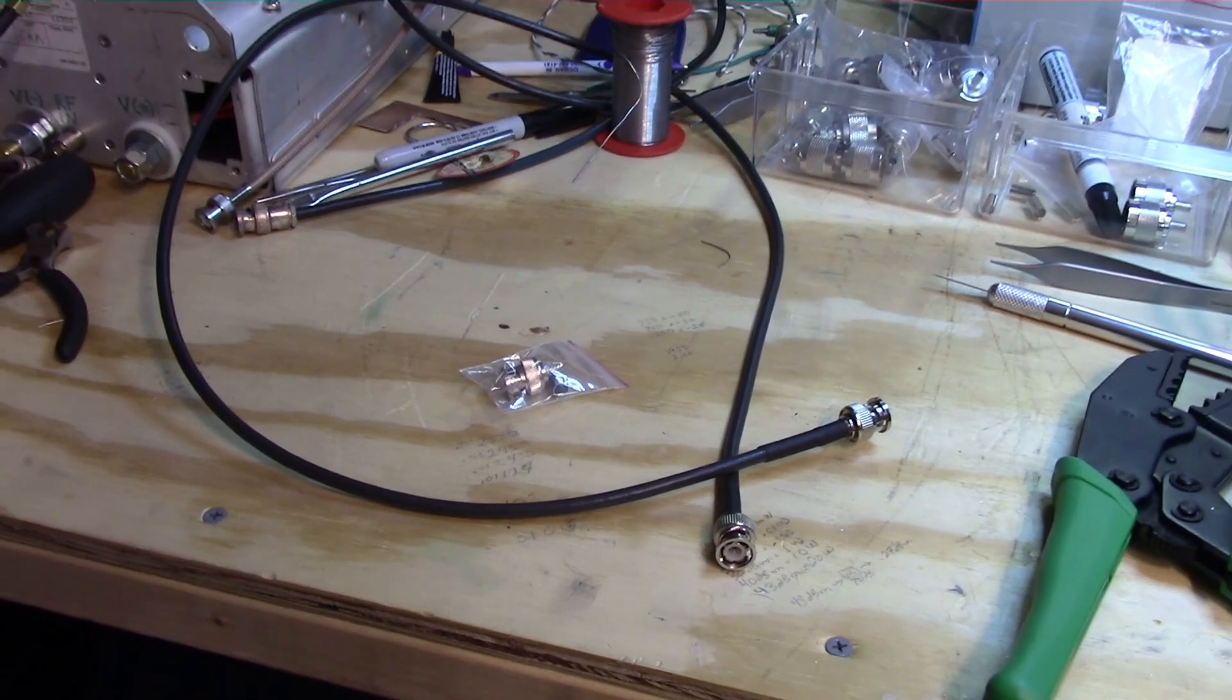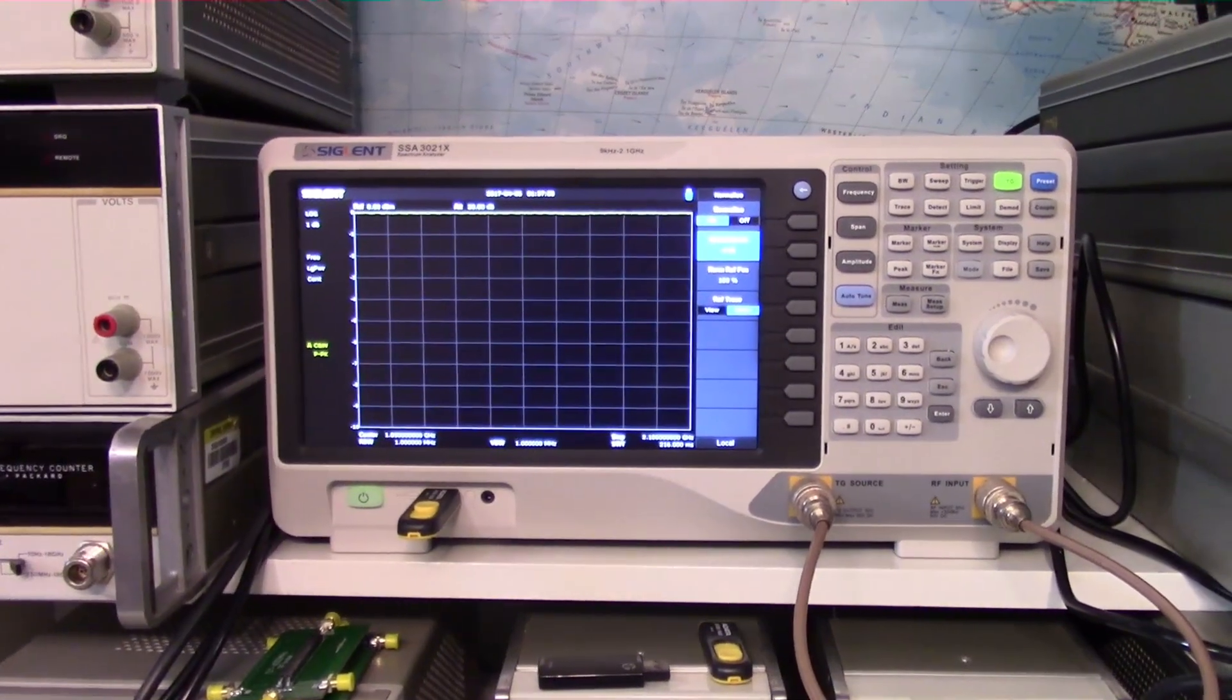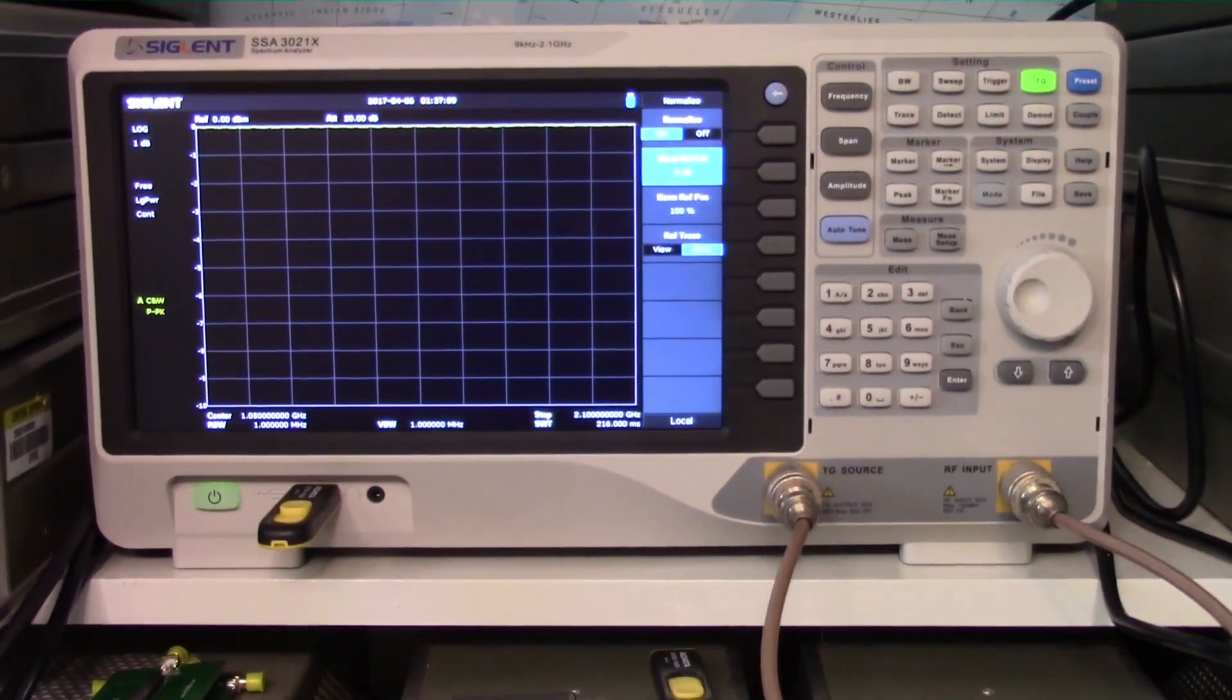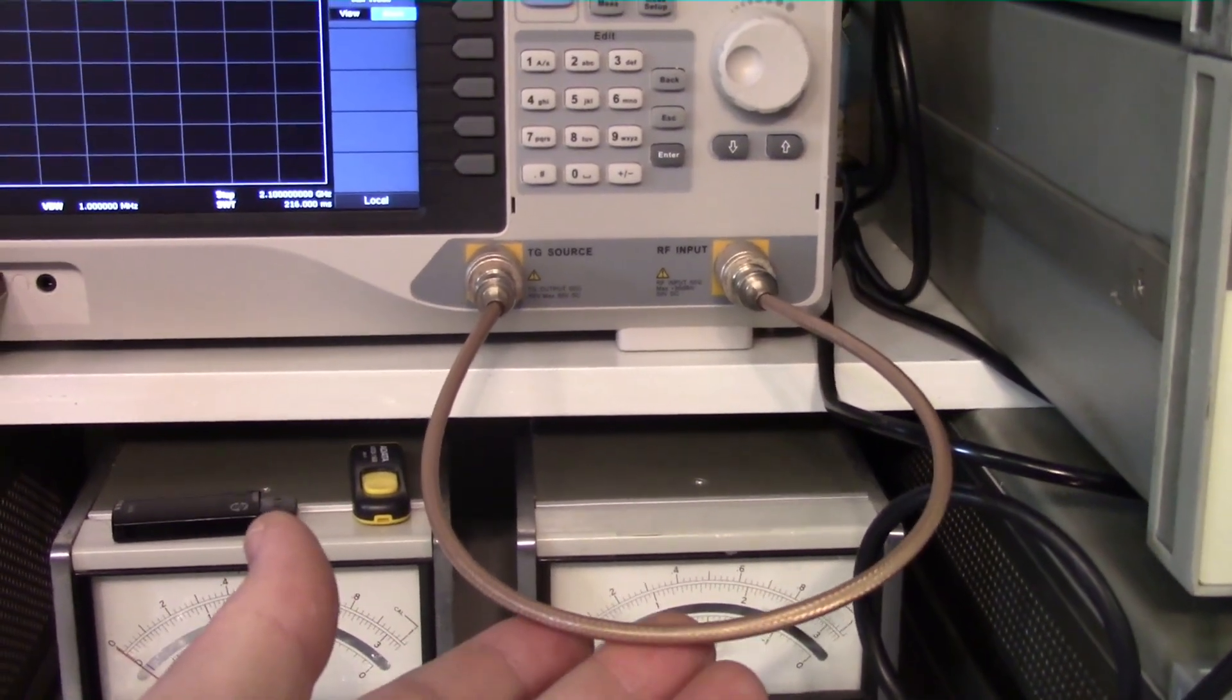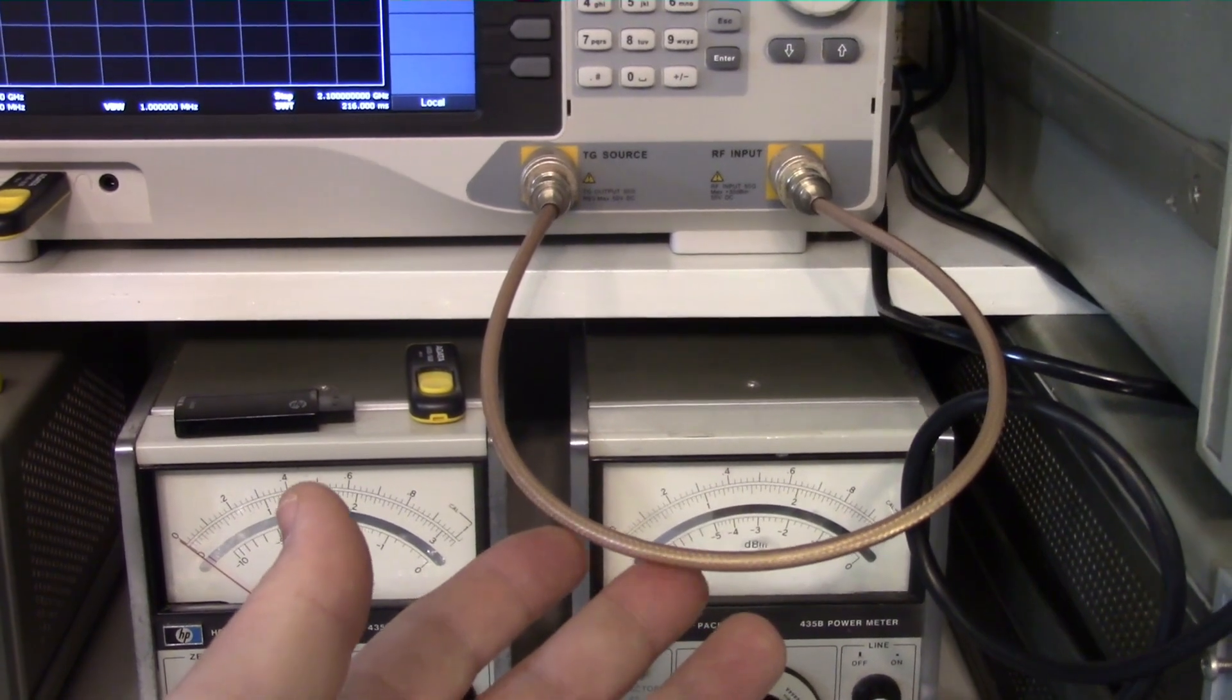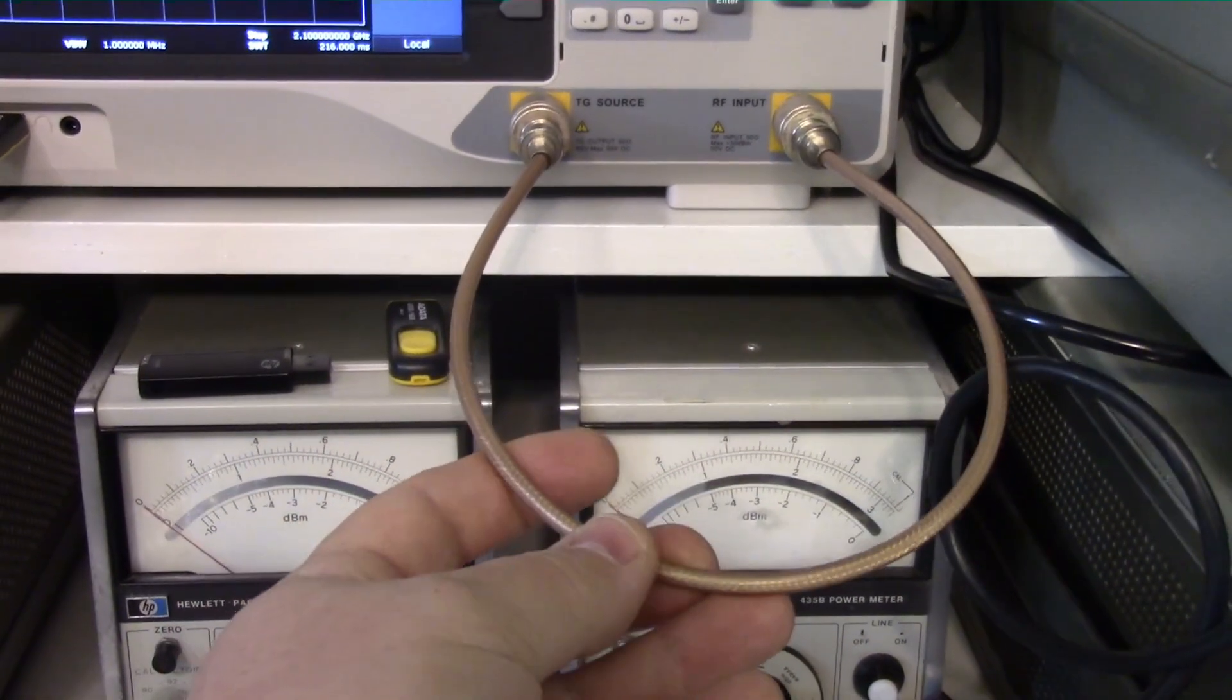First thing I did to evaluate the cable, I set up my Siglent 3021X spectrum analyzer that I am still totally in love with. What I've got here is a cable, this particular one is made out of RG142, very similar type of cable to the RG223 except it uses a Teflon dielectric but uses the same double shielding and all the conductors are silver plated.